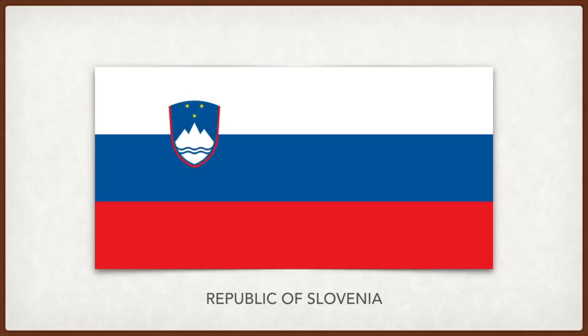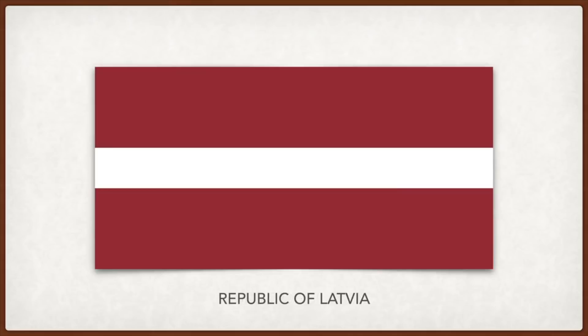Latvia: legend has it that a mortally wounded chief of the Latvian tribe was wrapped in a white sheet; the part of the sheet on which he lay remained white but the two edges were stained in his blood. During the next battle the blood-stained sheet was used as a flag and the Latvian warriors were successful, and thus the Latvian tribes have used these colors ever since. Blue represents the sky and rain, green prosperity, and white peace.